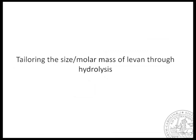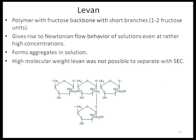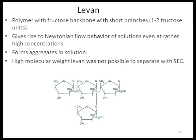Now I will talk about tailoring the size and molar mass of levan through hydrolysis. Levan is a polymer with a fructose backbone and short branches, typically one to two fructose units long. It gives rise to Newtonian flow behavior when dissolved, even at rather high concentrations — very unusual for a polymer where you would expect pseudoplastic behavior. It also forms aggregates in solution. Our collaborators had tried in many ways to separate this material with SEC but had been unsuccessful, so they wanted to try AF4, and we did.